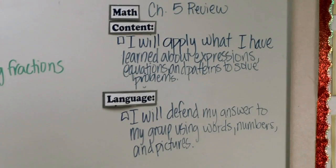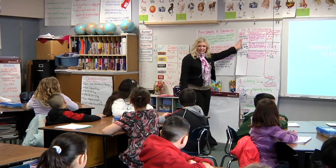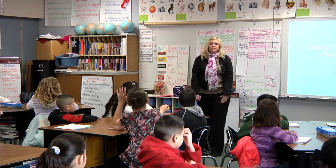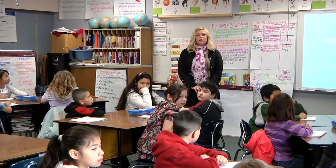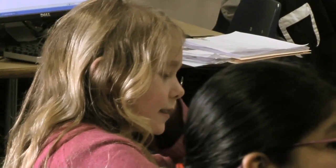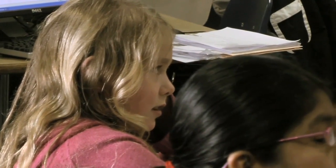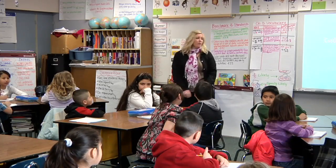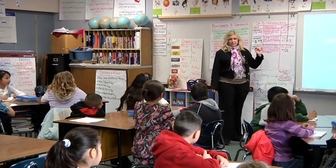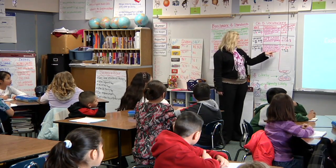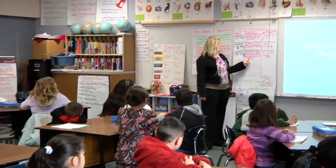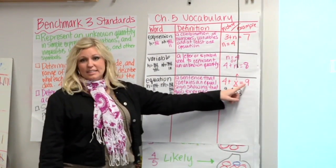So we talked a lot about expressions, variables, and equations this lesson. Who remembers what an expression is? Jill? It's a problem with a letter in it, but it doesn't have an equal sign. An equation is a sentence that contains an equal sign showing that two expressions are equal. So four plus x equals nine.